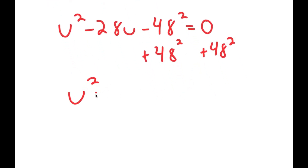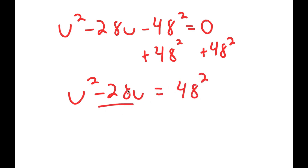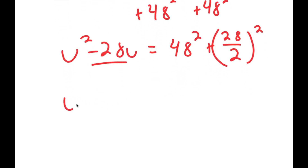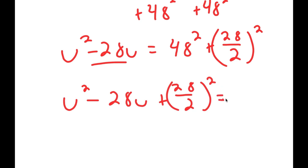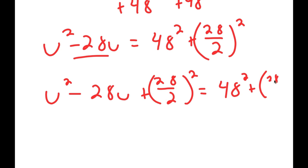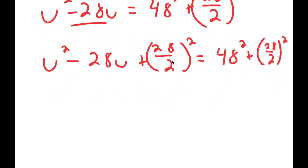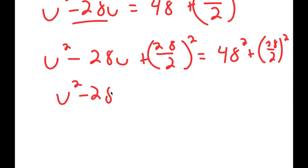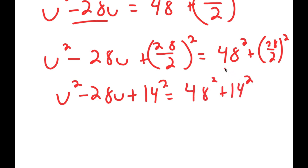I get u squared minus 28u equals 48 squared. Now I'm going to add 28 over 2, all squared, to both sides — that's the completing the square step. Adding 14 squared to both sides gives u squared minus 28u plus 14 squared on the left, equal to 48 squared plus 14 squared on the right. The left side factors as u minus 14, all squared.